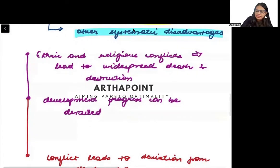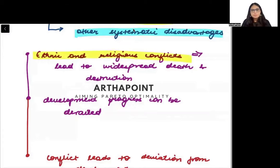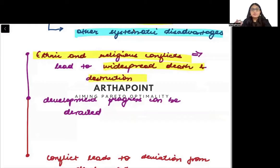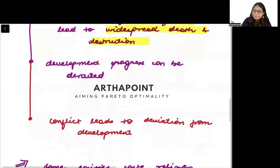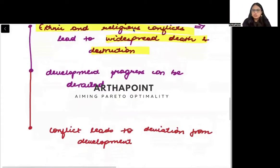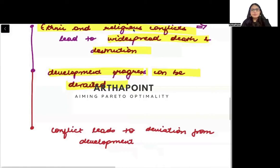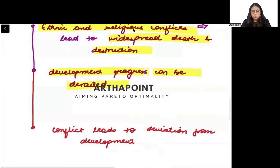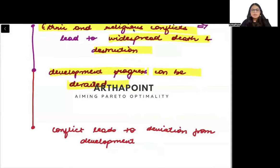Ethnic and religious conflicts arise where there are many religions and groups, leading to widespread death and destruction. When people are fighting with each other, development is derailed — no one focuses on development. Look at World War One and Two, and recent wars — governments stop focusing on development and shift their entire focus to stopping conflicts and building military capacity.